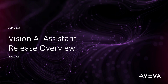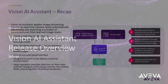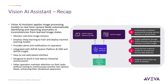Welcome to the release video for Vision AI Assistant version 2021 R2. Vision AI Assistant allows a customer to quickly and easily use existing camera feeds or images and videos to train AI models, which can then automatically generate an alert when a camera sees something that deviates from what's expected — effectively turning that camera into a visual sensor and providing customers valuable insights into the operation of their processes.